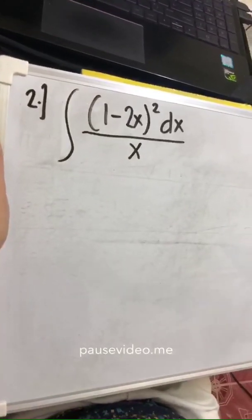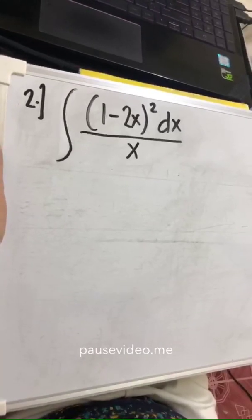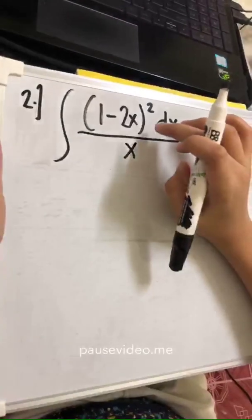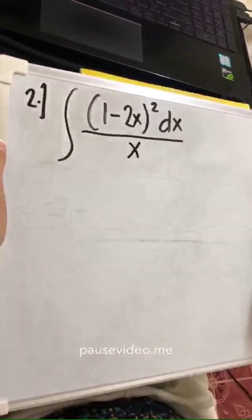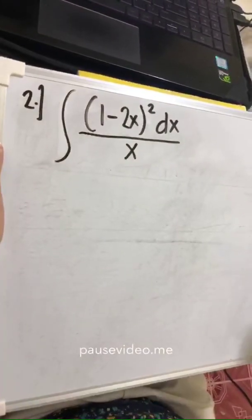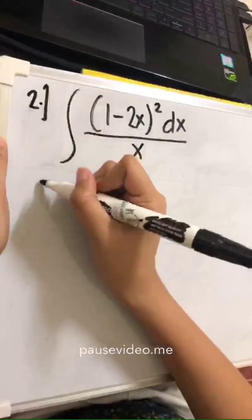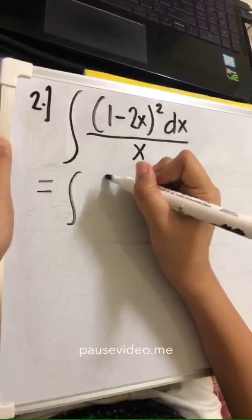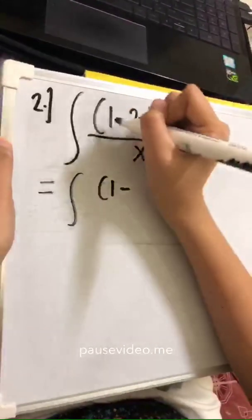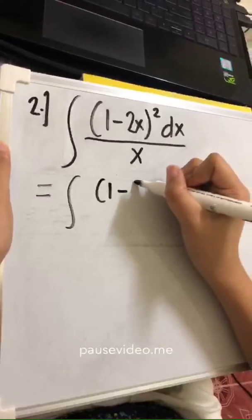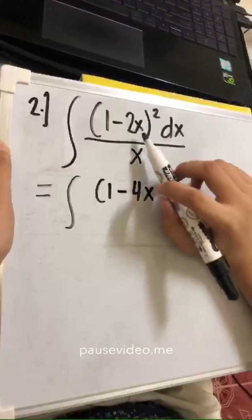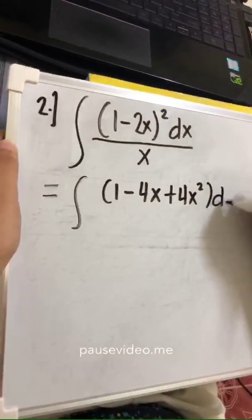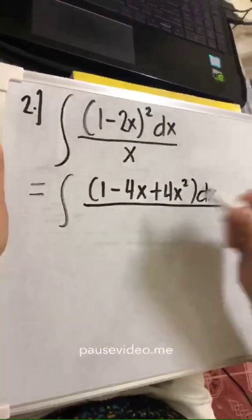Another example: the integral of (1 minus 2x) squared, dx, all over x. To solve this, we need to expand the numerator first and then see if we can cancel some terms. Expanding the numerator: 1 minus 2 times 1 times 2x gives negative 4x, then negative 2x squared gives positive 4x squared, and we have dx all over x.